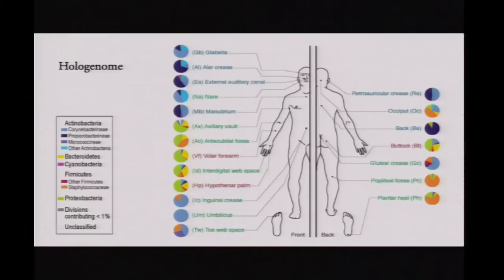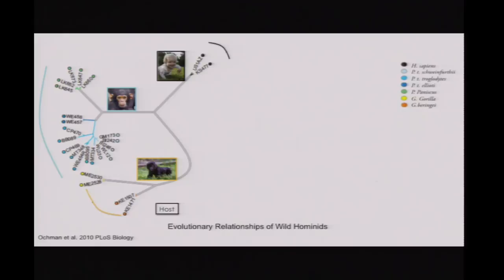Thank you very much Rob for the kind introduction, and I want to thank Lita Proctor for inviting me to be here today. Site-specific communities have co-evolved with hosts, and their genes conform unity with the human genome — we know that as the hologenome. How do we know they have co-evolved? There are different lines of evidence.